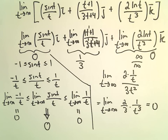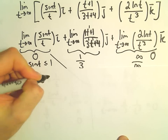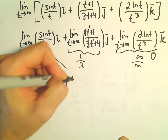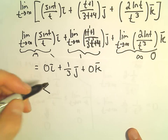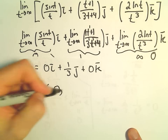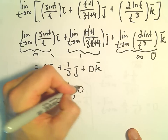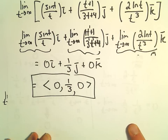So all we're left with is 0 times i plus 1/3 times j plus 0 times k. Or in alternate notation, the answer is ⟨0, 1/3, 0⟩ — that is the limit of our vector-valued function as t approaches positive infinity.